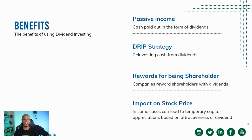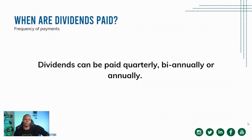Something interesting I've observed is that in some cases there's an impact, at least in the short term, on the stock price when a company offers an attractive dividend. Dividends can be paid quarterly, bi-annually, or annually — it depends on the approach the board of directors decides to take. Usually companies will communicate in advance what their strategy is relating to dividends, so it's not going to catch you by surprise. It's usually communicated as part of the company's strategy to attract investors.